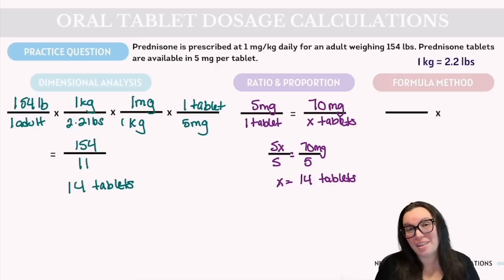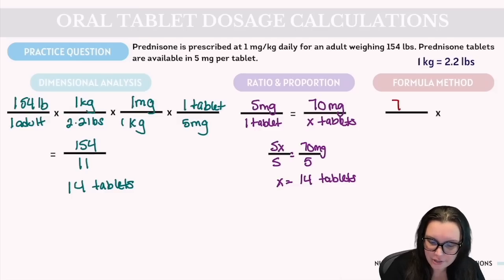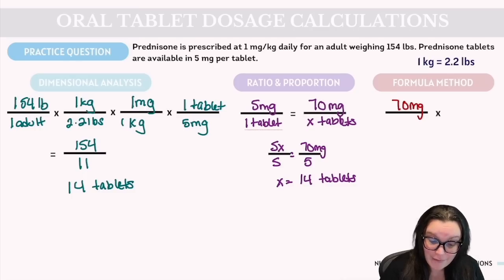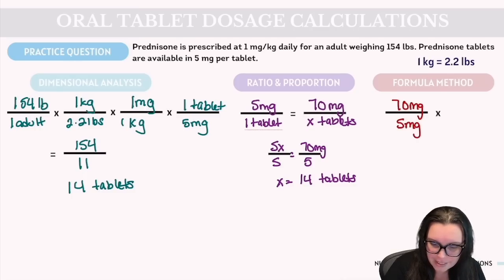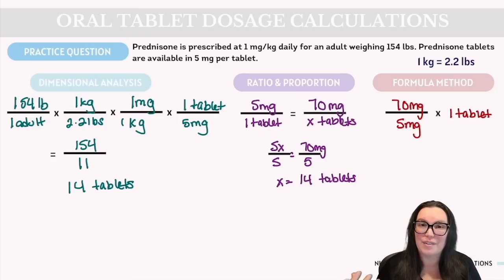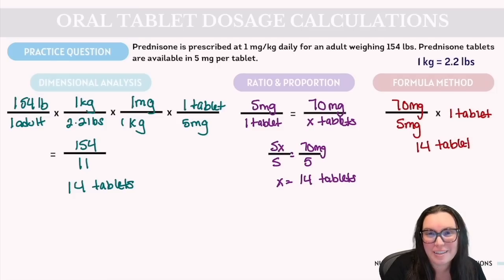For the formula method: desired over have, multiplied by quantity. We desire 70 milligrams (already converted). We have 5 milligrams available in one tablet. So 70 ÷ 5 = 14, multiplied by 1, giving the correct answer of 14 tablets.